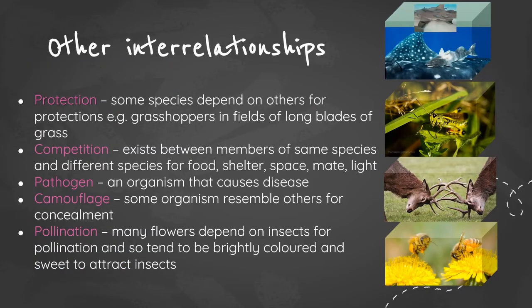We can look at other relationships within ecosystems. Protection: some species depend on others for shelter, such as a grasshopper hiding in long blades of grass. Competition: members of the same or different species compete for food, shelter, space, mates, or light. A pathogen is any organism that causes disease — this can be a bacterium, virus, or fungus.